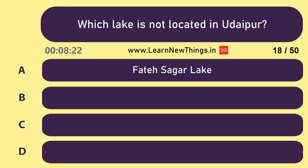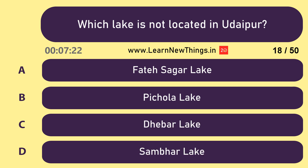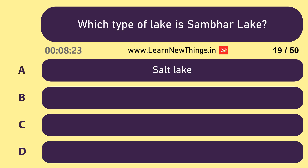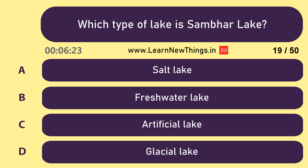Which lake is not located in Udaipur? Sambhar Lake. Which type of lake is Sambhar Lake? Salt Lake.